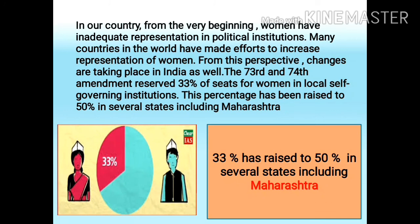In our country, from the very beginning, women have had inadequate — meaning less — representation in political institutions. Political institutions are organizations that create, enforce, and apply the law, like the political system, elections, political parties, and legislatures. Many countries in the world have made efforts to increase representation of women, and changes are taking place in India as well. The 73rd and 74th amendments — amendment means a change in the constitution — reserved 33% of seats for women in local self-governing institutions like municipalities, municipal corporations, or Gram Panchayats.